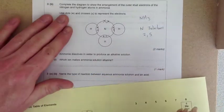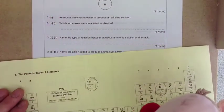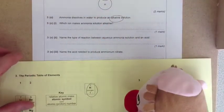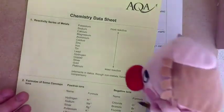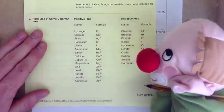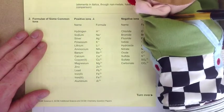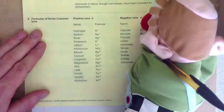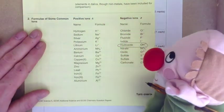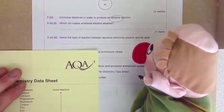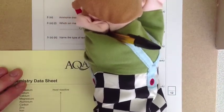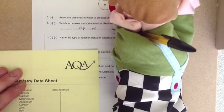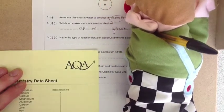Ammonia dissolves in water to produce an alkaline solution. Which ion makes ammonia alkaline? If you look in the back of your periodic table, you'll find positive ions and negative ions. What makes solutions alkaline is the hydroxide ion, OH minus, which is called the hydroxide ion.